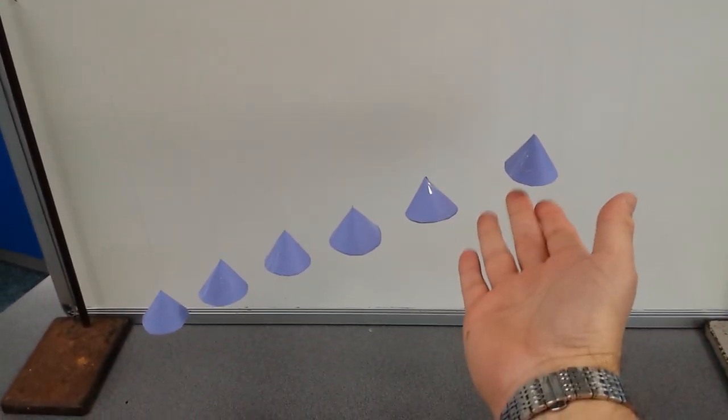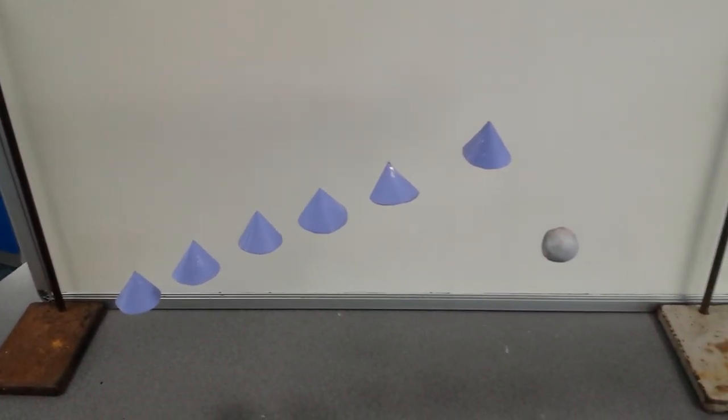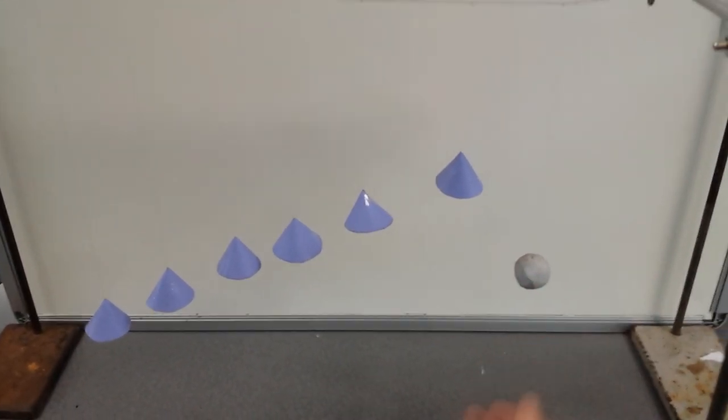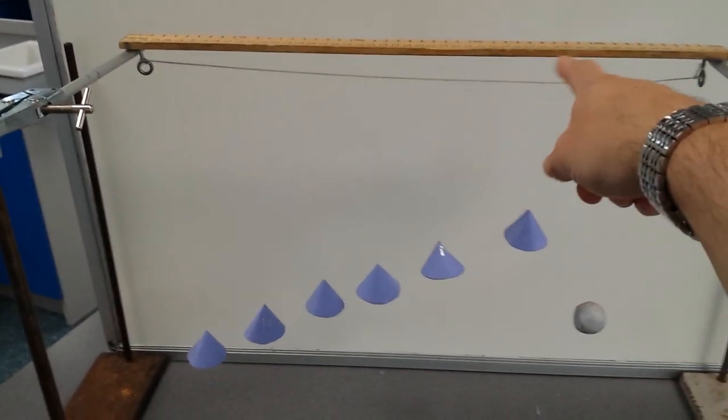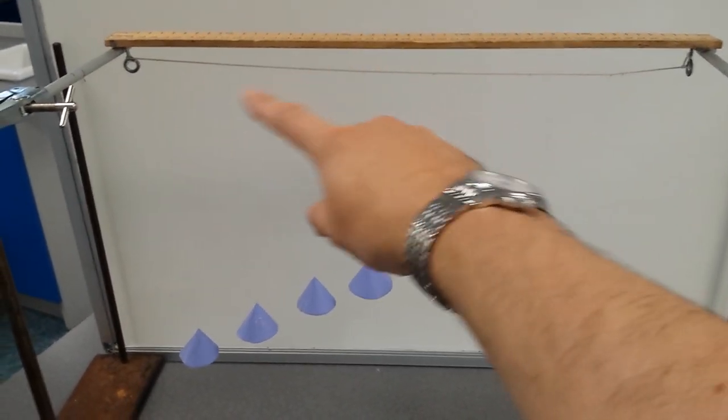So we've got all of these cones that are weighted with a small piece of blue tack on the inside. I've got a ball of blue tack and I've got them all suspended on this wooden ruler with a string and some fishing line.